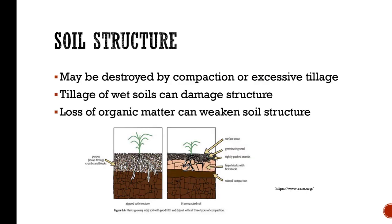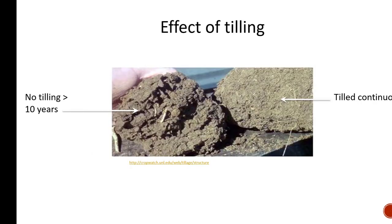Soil structure can be destroyed by compaction or excessive tillage. Tillage of wet soils can definitely damage structure, and loss of organic matter can weaken soil structure. Here's a picture of soil on the left that had no tilling for 10 years — you can see it's got nice aggregation. On the right, you'll see soil that's been tilled continuously — there's very little pore space and no aggregation.